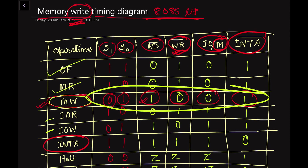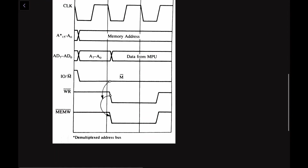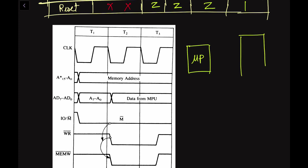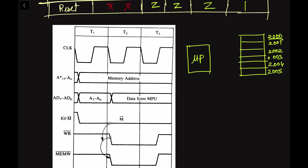Now we will use these signals for drawing the timing diagram. Suppose we have the microprocessor unit and a stack of memory with different addresses: 2000, 2001, 2002, 2003, 2004, and 2005. These are the various memory addresses we are working with.